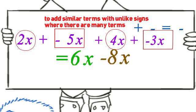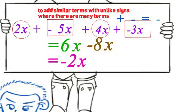Finally, we add the results as we learned earlier. So, 6x plus negative 8x will be equal to negative 2x.